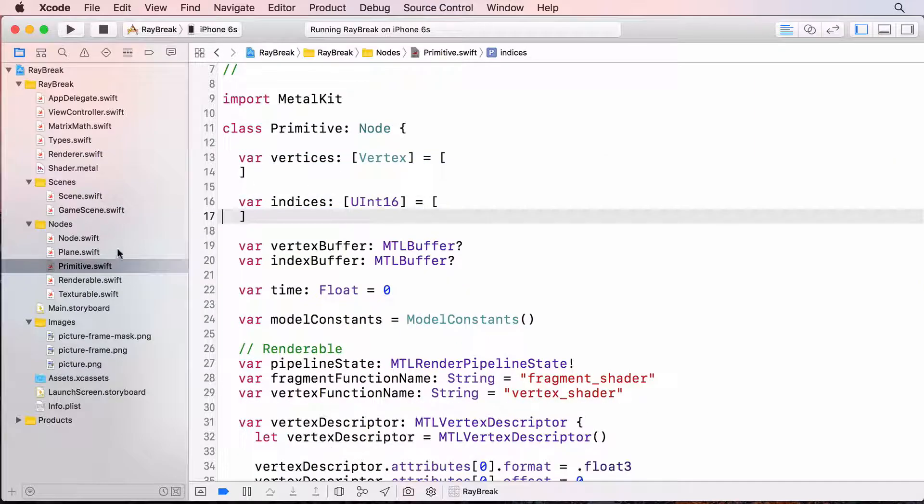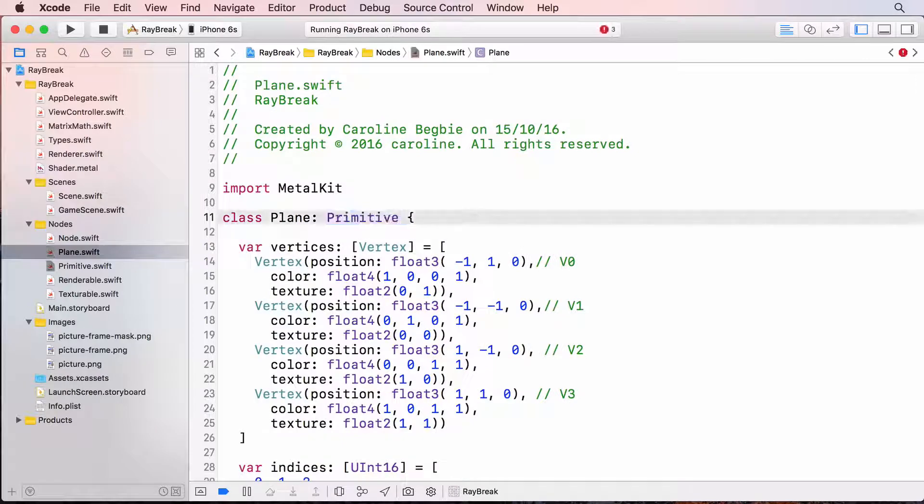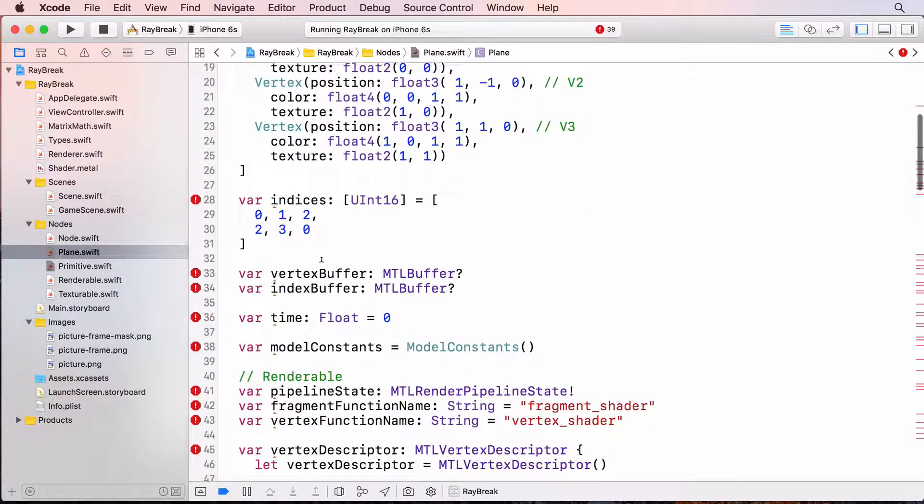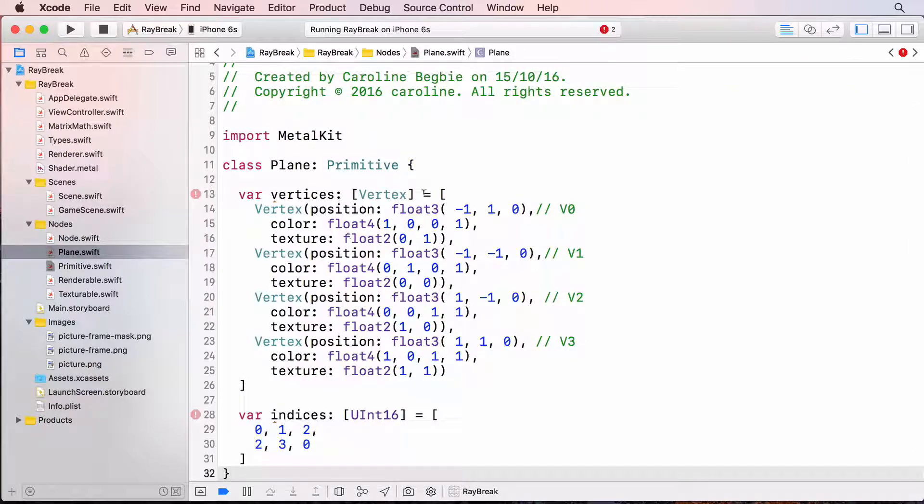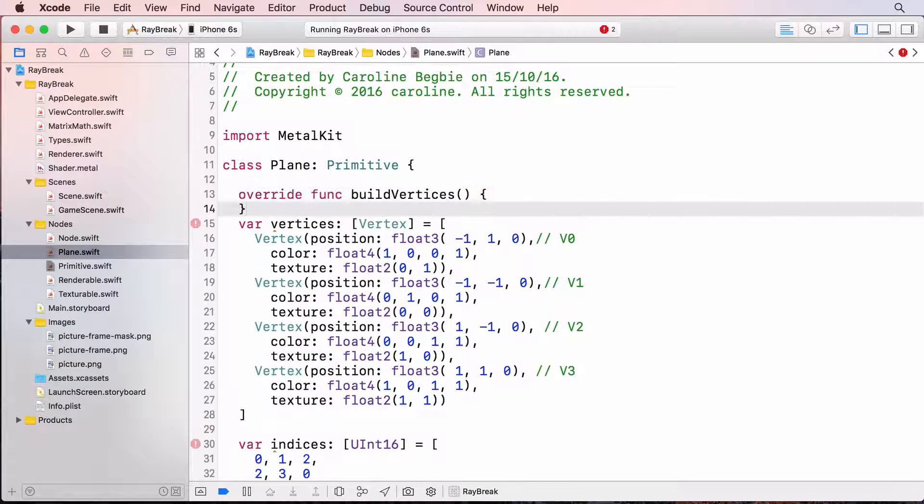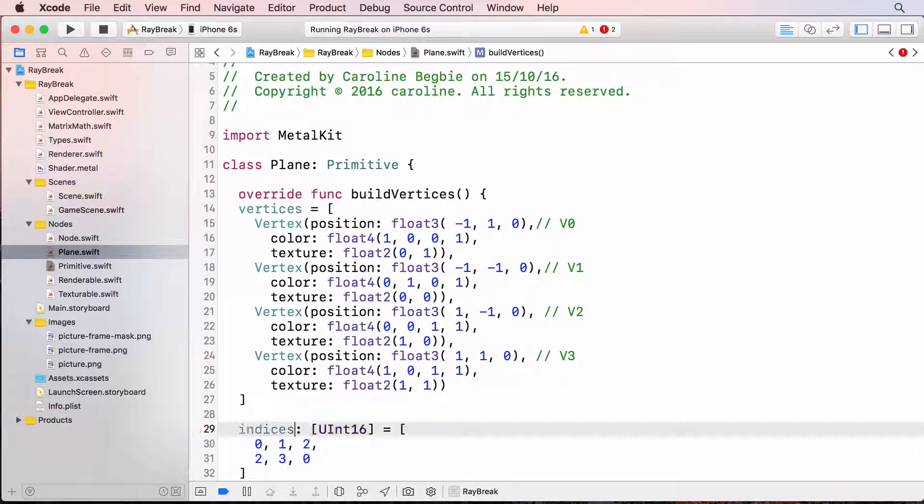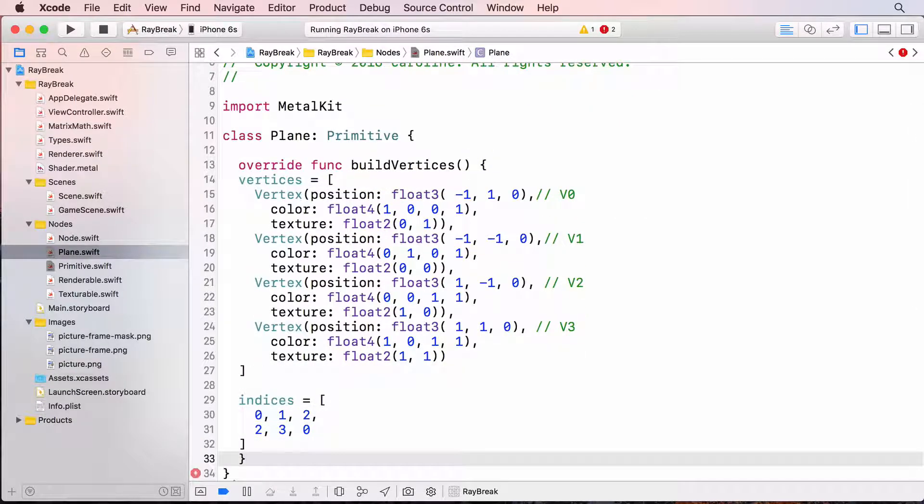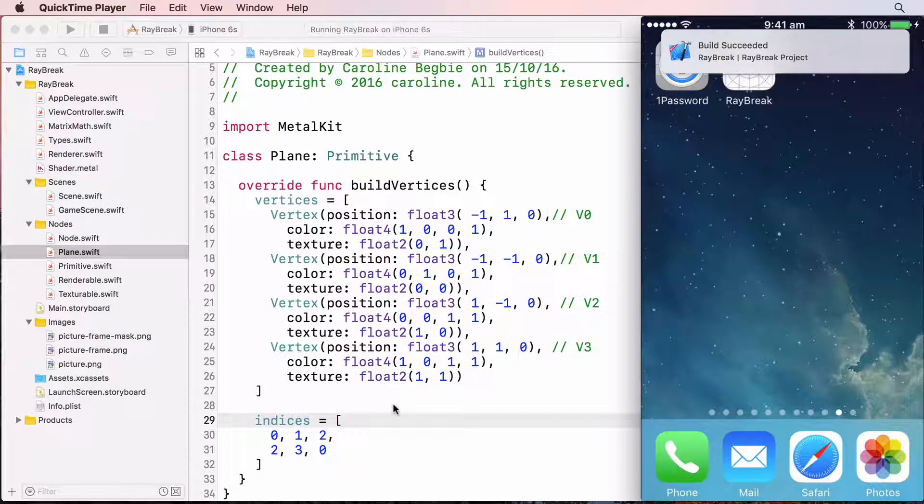In plane, I'll change it to be a subclass of primitive and delete almost all the code. I'll override build vertices with the plane's vertices. So the plane class consists only of the vertices and indices data. Build and run to make sure nothing's changed.